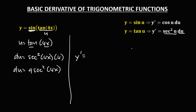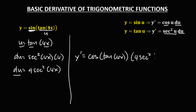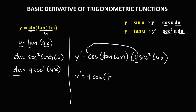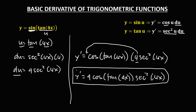To find the derivative, since the derivative of sine is cosine, we have cos(u) where u is tan(4x), times the derivative of u, which is 4·sec²(4x). Simplifying, we can put 4 before cosine, so y' = 4·cos(tan(4x))·sec²(4x). So this is now the derivative.